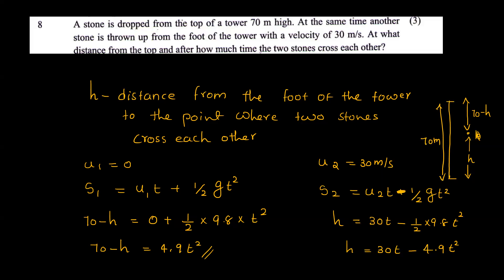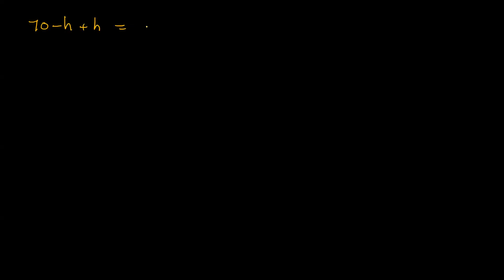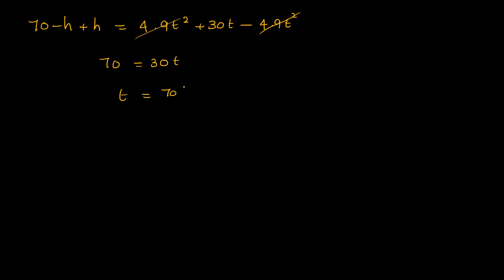Adding the two equations, the 4.9t squared terms cancel. So 70 equals 30t, giving t equals 70 divided by 30, which equals 2.33 seconds.